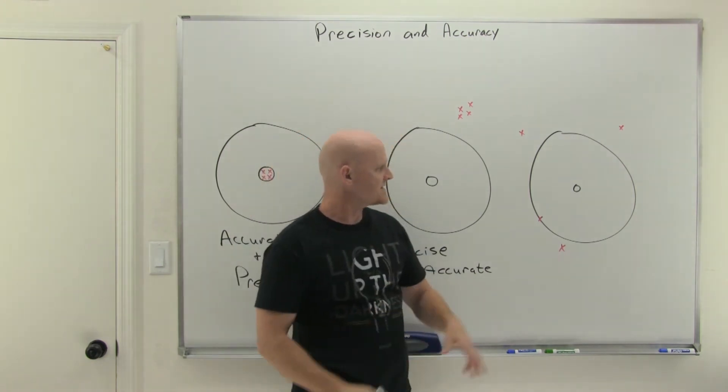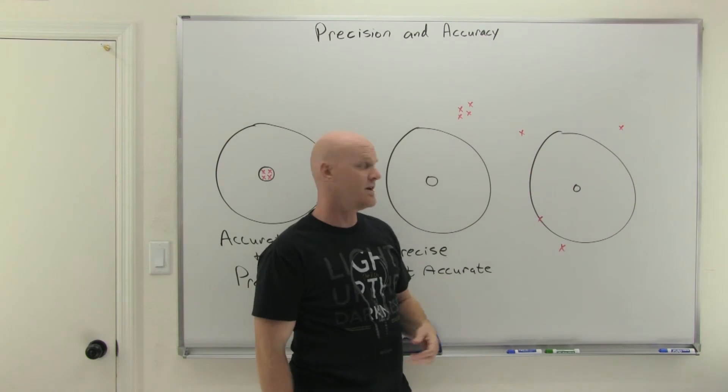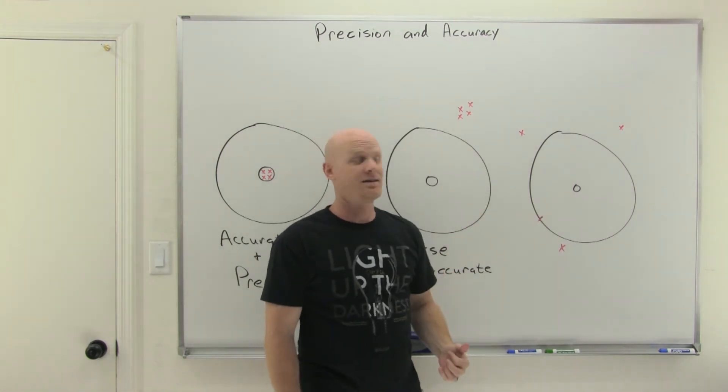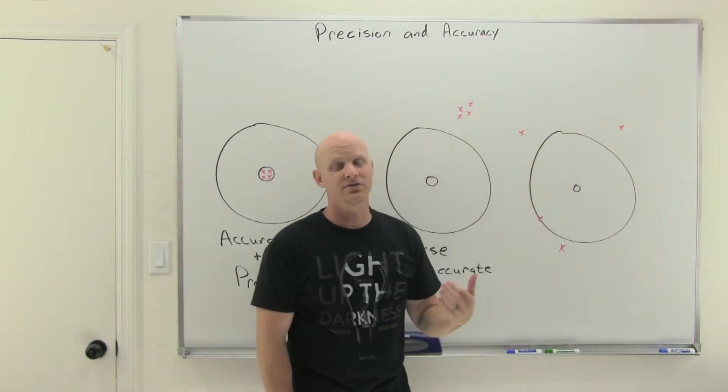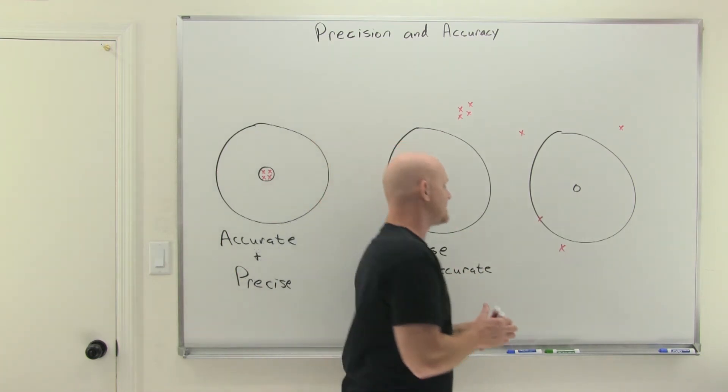Finally, in this last example, we've got four shots. None of them are close to the bullseye, and none of them are really all that close to each other as well. And so in this case, we're neither precise nor accurate.